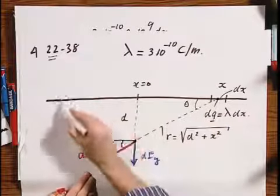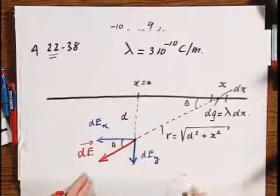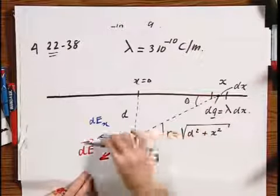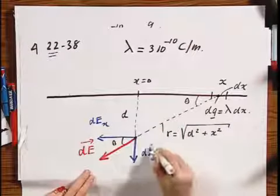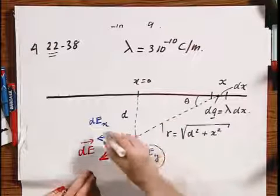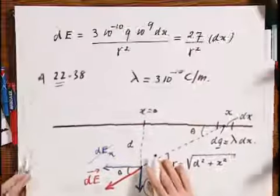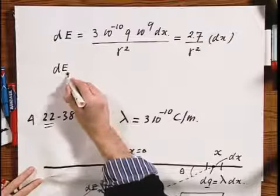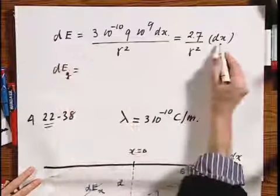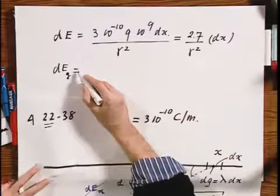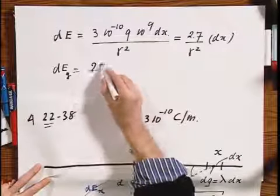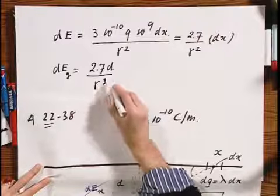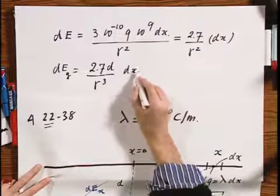Now clearly, if you add up all these elements here, there cannot be any net vector in the x direction. They will all cancel out. So the only one that survives is this one. So I don't even bother about the x direction. So I only calculate dE in the y direction. That, of course, is this value times the sine of theta. And I find then 2.7 d divided by r cubed times dx.